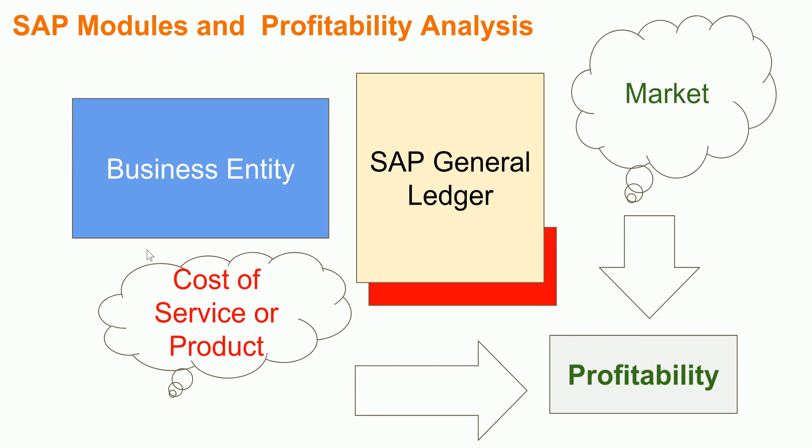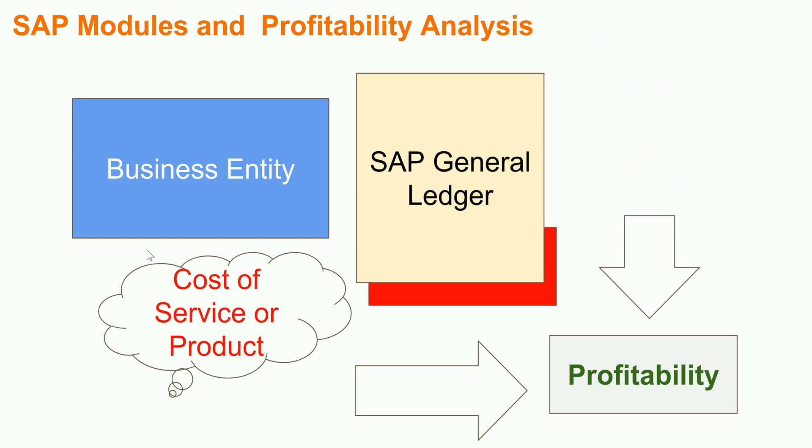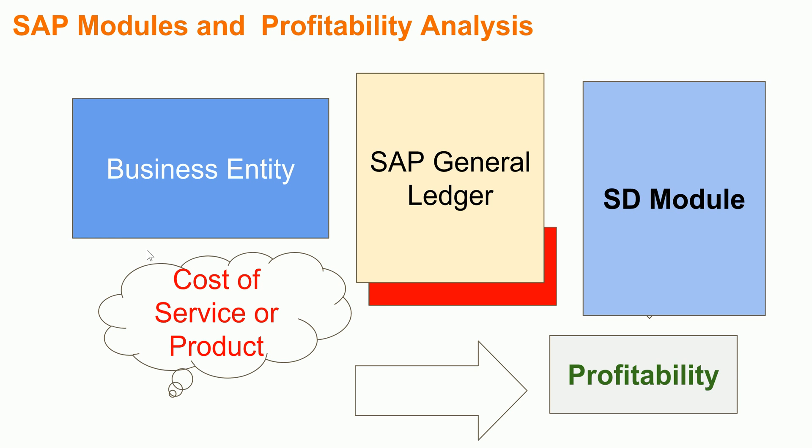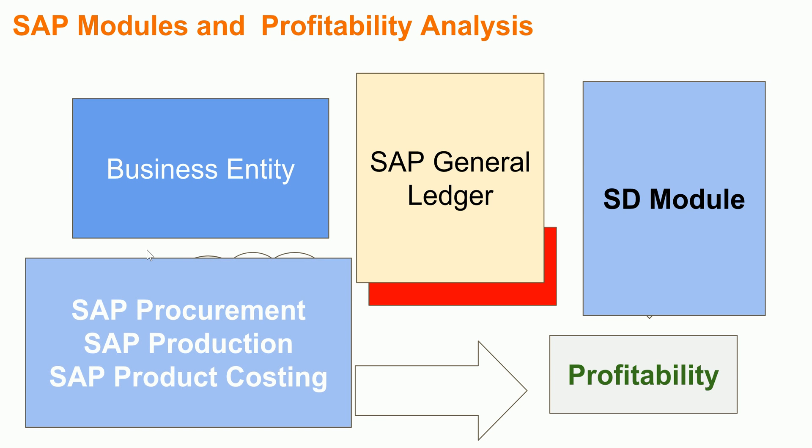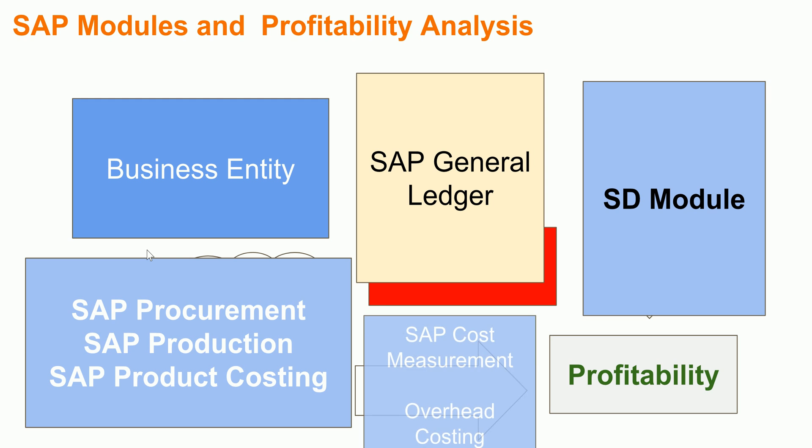All sales-related activity is part of the SAP SD — Sales and Distribution — module, which handles the business side of sales, including CRM and other core sales functions. On the cost side, SAP procurement handles procuring raw materials which are converted into finished products through manufacturing, managed via the SAP PP module. You also have SAP Product Costing for measuring product cost, and indirect costs such as overheads are also part of your overall profitability.